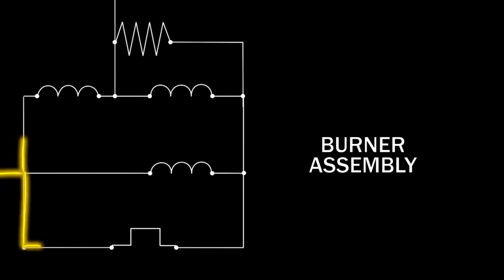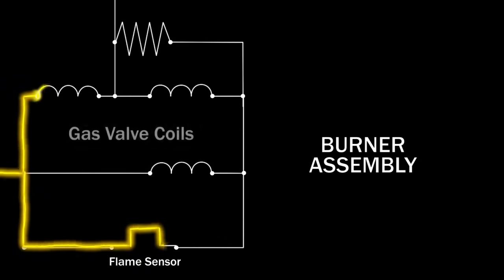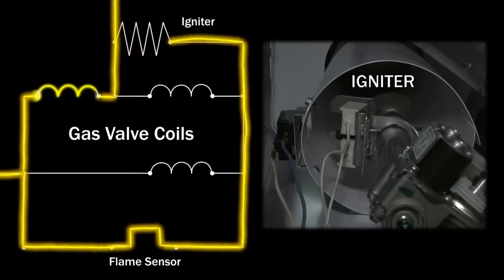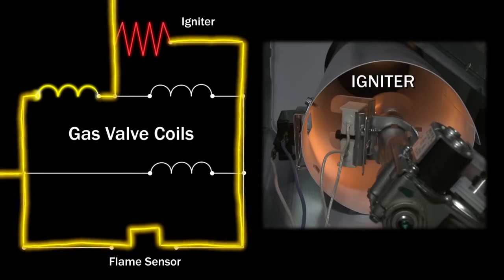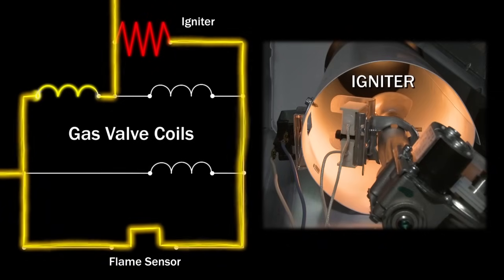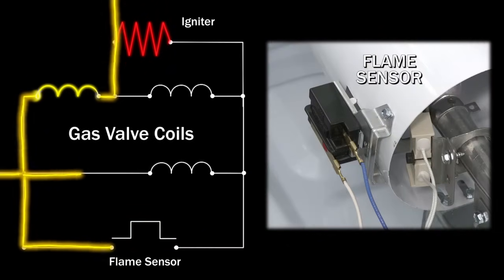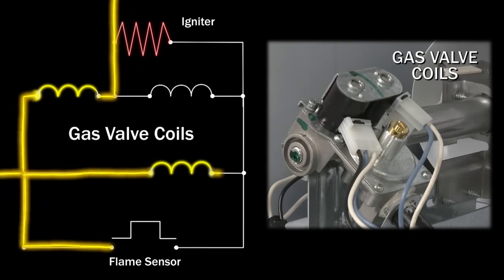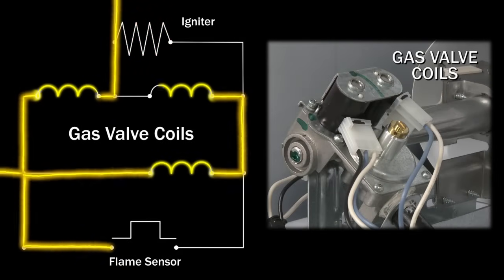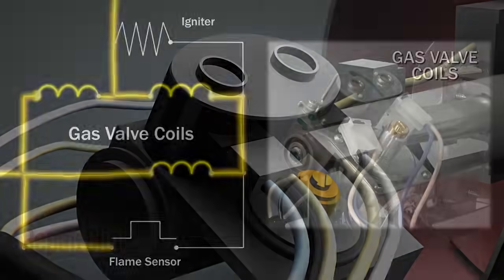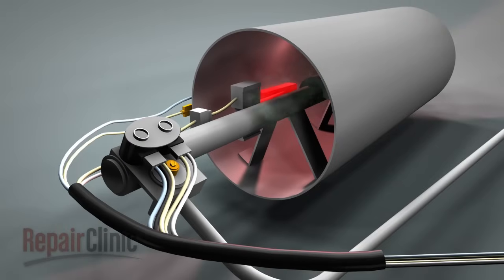The voltage then travels through the flame sensor and the first gas valve coil before reaching the igniter. The igniter will begin to glow, and when it gets hot enough, the flame sensor will detect the heat and switch off, which diverts the current to the other gas valve coils. The coils then activate plungers in the gas valve, which allow gas to flow out into the burner housing. Since this happens very quickly, the igniter is still hot enough to ignite the gas, establishing a long blue flame with an occasional yellow tip at its end.